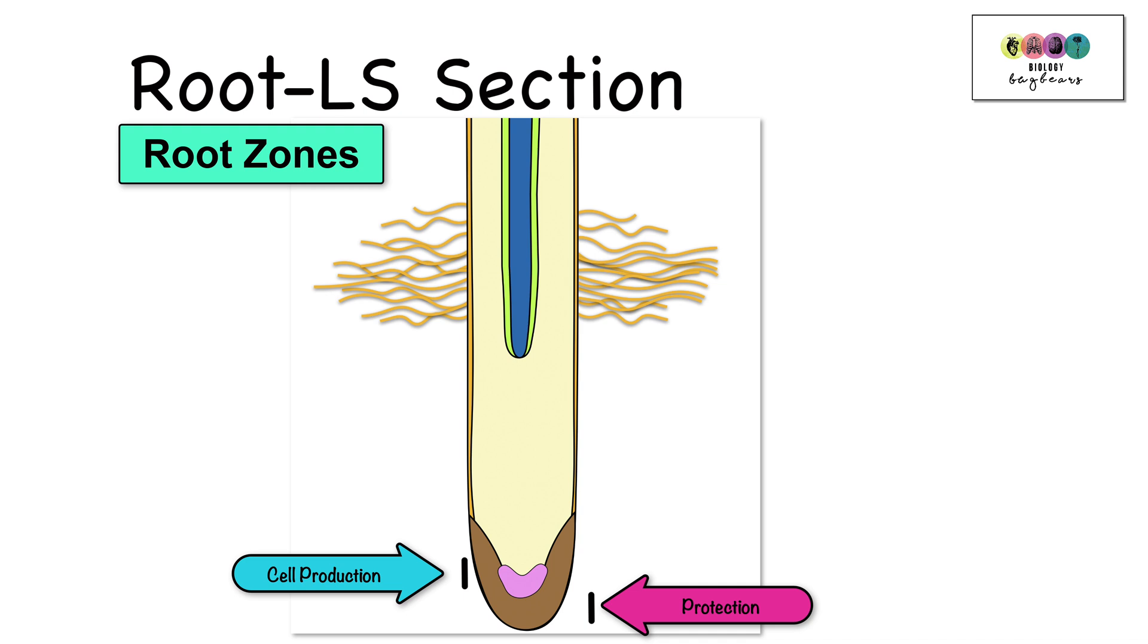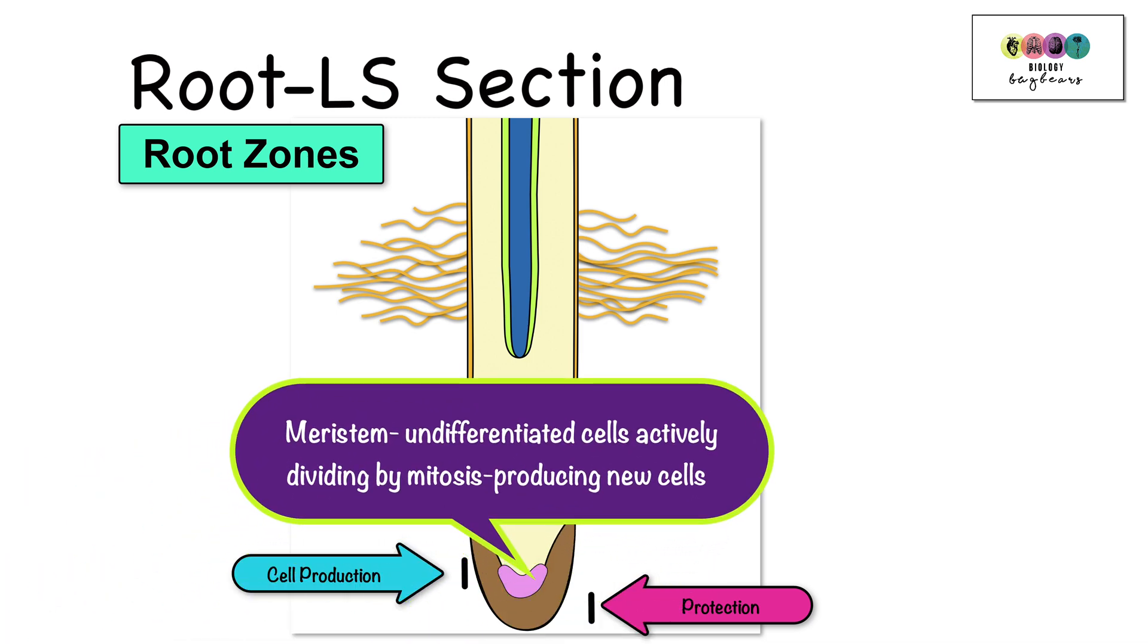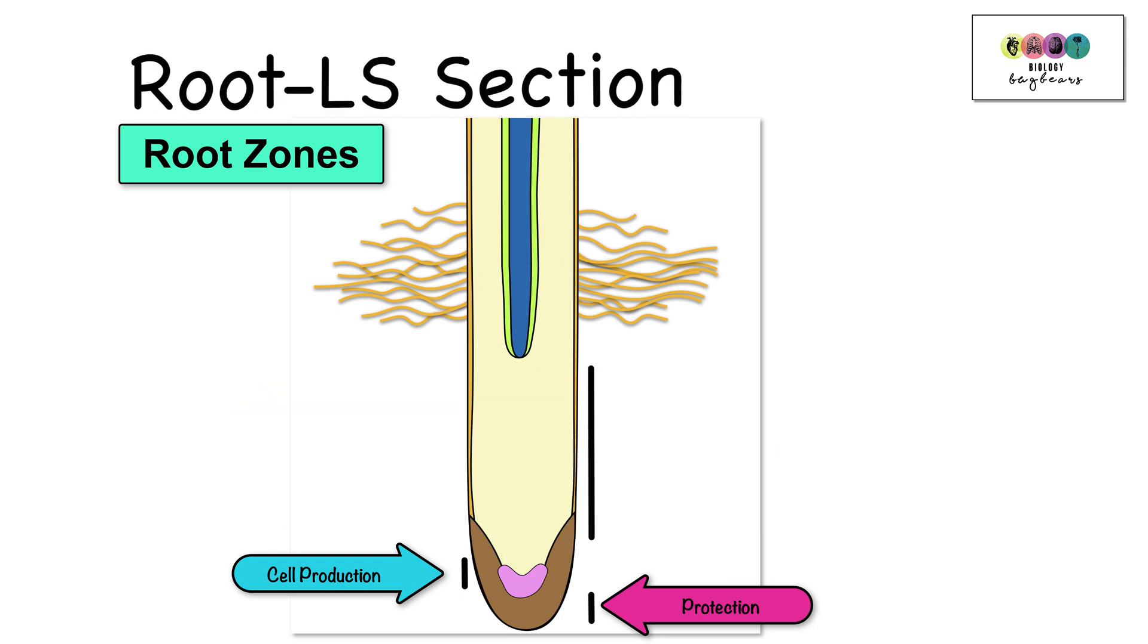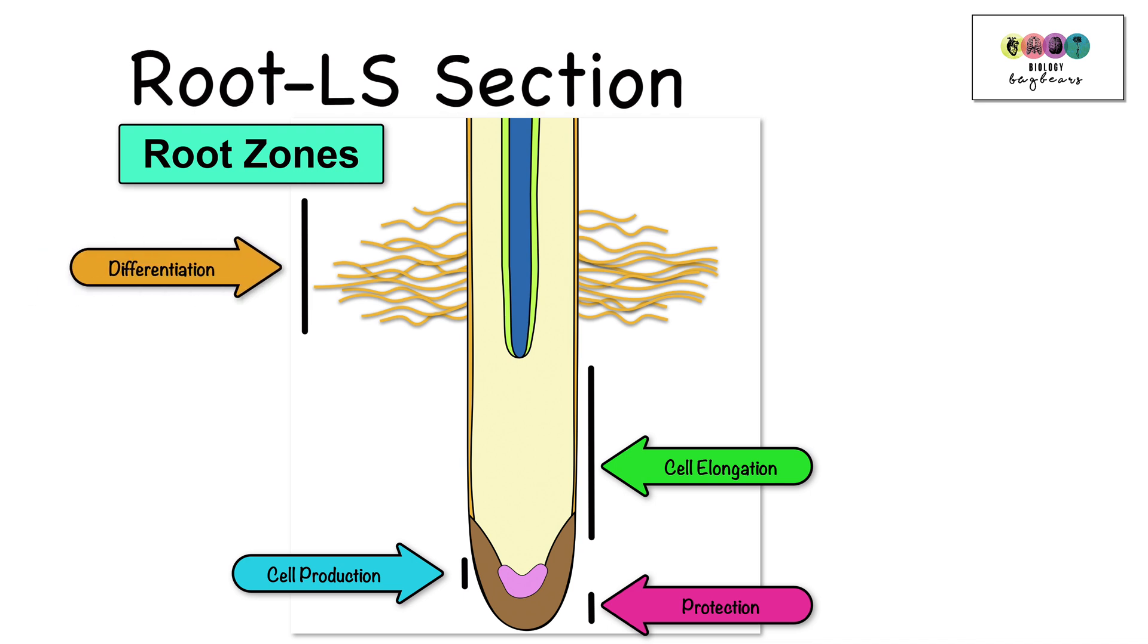So just above the zone of protection is the zone of cell production, where we find the meristem. In the meristem, new cells are produced, because the meristem is made up of undifferentiated cells that just constantly divide. Above this we have the zone of cell elongation, where some of those newly produced cells will get longer. So just above the zone of cell elongation is the zone of differentiation. This is where those newly produced cells become specialized. They form particular types of cells, and it's here that you find the root hairs.